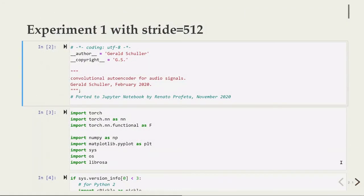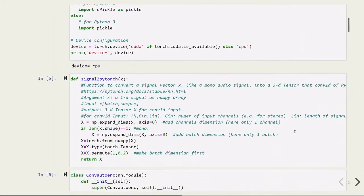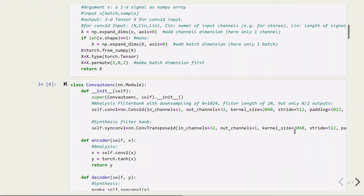We will do two experiments. The first experiment we will use a stride of 512. We will have some parameters of our autoencoder using 32 channels and a kernel size of 2048. In the second experiment we will reduce drastically this stride and we will use a stride of 32.